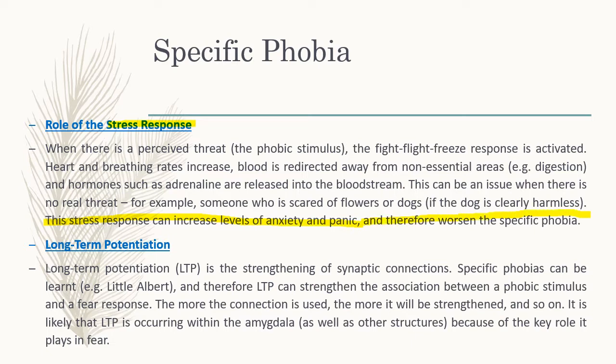Long-term potentiation — from Unit 3 — is the strengthening of synaptic connections. Specific phobias can be learned, and therefore long-term potentiation can strengthen the association between a phobic stimulus and a fear response. The more the connection is used, the more it will be strengthened. It is likely that long-term potentiation is occurring within the amygdala as well as other structures, because of the key role it plays in fear.